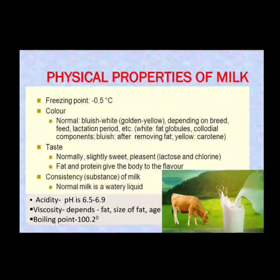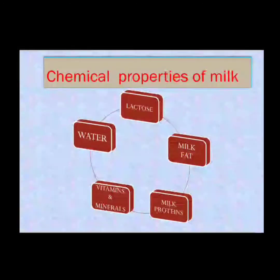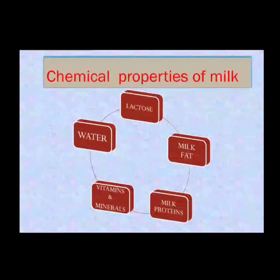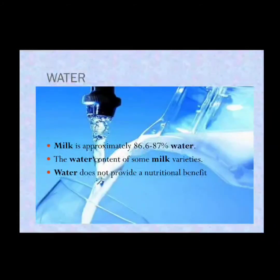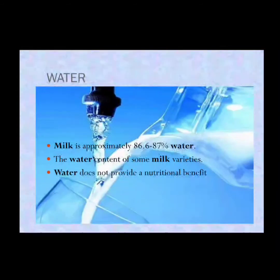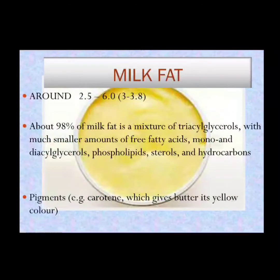Moving on to the chemical properties, milk can be categorized into: water, lactose, milk fat, milk proteins, vitamins, and minerals. Milk approximately has 86.6 to 87 percent water. This water content present in milk does not provide any nutrition.